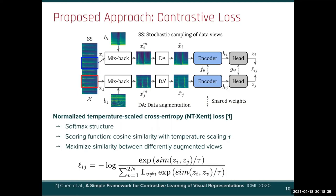Finally, the resulting embeddings are compared with a contrastive loss — in our case, normalized temperature-scaled cross-entropy — which has a softmax structure and cosine similarity as the scoring function, with a temperature that adjusts its sensitivity.